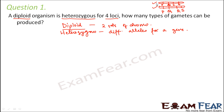Since it is diploid, we have two sets of chromosomes. Since it is heterozygous, they are different — capital P, small p, capital Q, small q. Since it has four loci, it has four genes or four locations on the same chromosome — that is four contrasting characters or four genes. Now we have to find out how many types of gametes can be produced from it, so we have an organism with four contrasting traits.